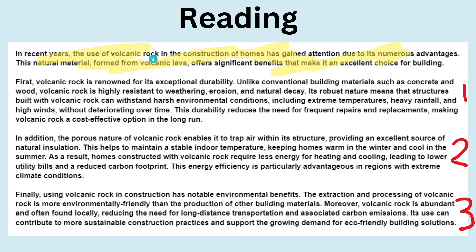At the beginning, you're going to get an introductory paragraph where the author gives his main thesis. In this case, the main thesis is that volcanic rock is an excellent source of building material and we should make buildings out of it. And then after that, there are three supporting arguments. First, he says volcanic rock is very durable, and there's a whole paragraph about its durability. His second supporting reason is that it's an excellent source of natural insulation — a whole paragraph about that. And finally, it also has environmental benefits, with a whole paragraph about that.